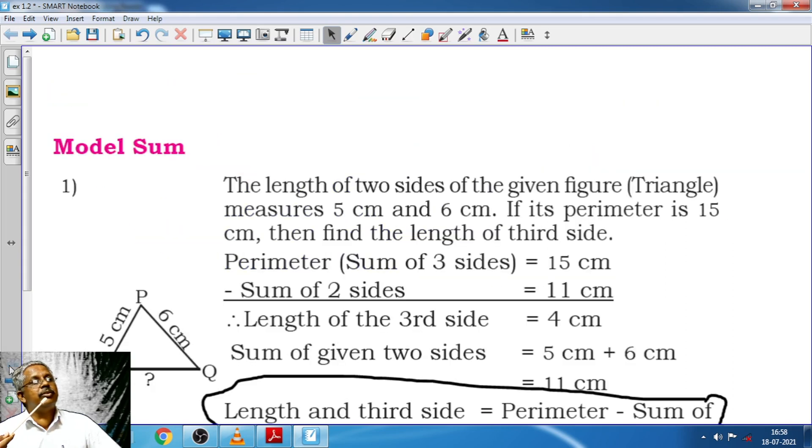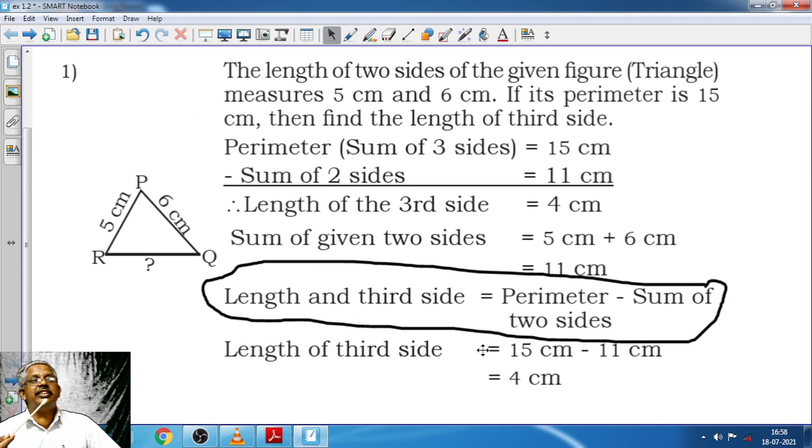So our intention was to teach you length of the third side is equal to perimeter minus sum of two sides if the given geometrical figure has three sides. Suppose if it has four sides and one is unknown, what are we supposed to do? Length of the fourth side is equal to perimeter of those geometrical figures minus sum of the known three sides. In case if it is five, try to tell me the perimeter of the whole five sides minus sum of the known four sides. That's right. Thank you very much.